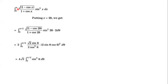The limit is zero to pi, and if we use trigonometry, we require zero to pi by 2. So we will substitute x equal to 2 theta. The limit will be converted to zero to pi by 2. In place of 1 minus cos x, we put 2 theta; 1 plus cos x becomes cos 2 theta; sin²x becomes sin² 2 theta; dx equals 2 d theta. This gives 2 cos² theta for the first factor.